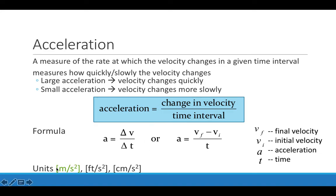The units that we use for acceleration in physics are meters per second squared. We could also use any units that have length over time squared, like feet per second squared or centimeters per second squared, but the standard unit that we're going to use would be meters per second squared.